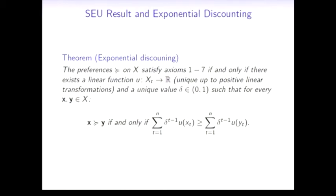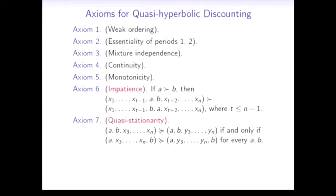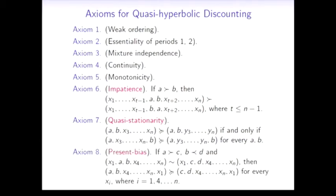Speaking about quasi-hyperbolic discounting, the transition to quasi-hyperbolic discounting is not that complicated in this particular case either. We begin again with the same set of axioms, and what we need to do is generalize impatience and relax stationarity to quasi-stationarity, which is effectively stationarity but from the second period on. The important addition here is the present bias axiom, which states that if we have this indifference in our preferences and the first consumption stream is impatient whereas the second consumption stream is patient...